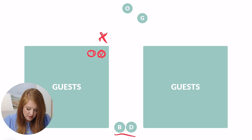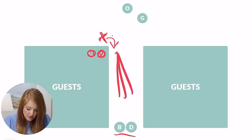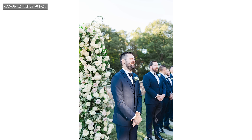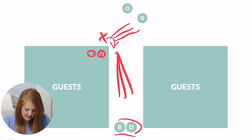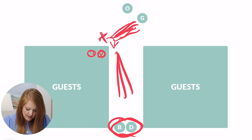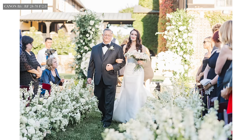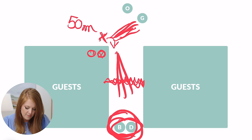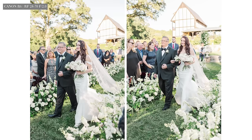I dip in front to capture the bride and her dad, but I'm also making sure to get a great reaction from the groom — as soon as he sees her. When she's way in the back, I focus on the groom, because I know the key shots of her are when she's in the closer zone. At 50 millimeters, that's a full-length, great vertical framed portrait of her walking down the aisle. So when they're far back, I focus on the groom, then the bride and dad, then back to the groom.